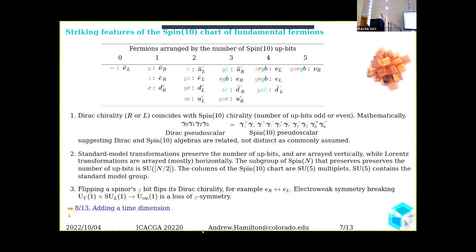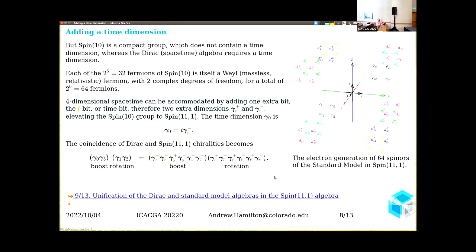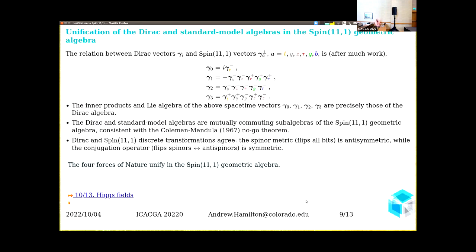One final comment: if you look carefully, you see that the right-handed neutrino and left-handed electron differ by a flip of the Y-bit. It turns out that electroweak symmetry breaking, which is a breaking of the hypercharge and weak forces into the electromagnetic force—I've said adding a time dimension is potentially capable of unifying the Dirac algebra and the Spin(10) algebra, which contains the standard model, but you have to do a lot of work to make that happen.